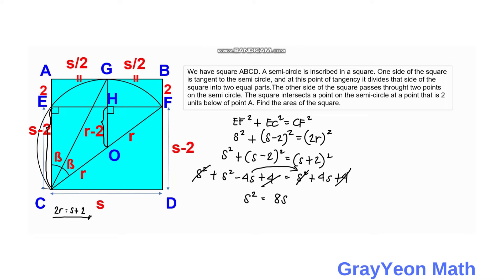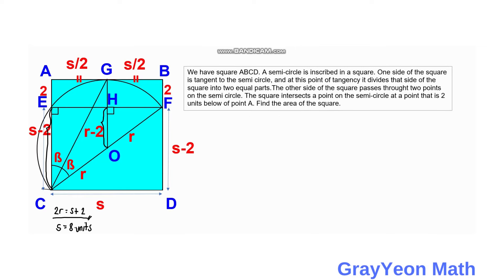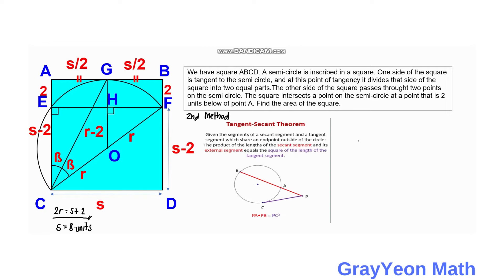This gives us 8S equals S squared, or the quadratic S squared minus 8S equals 0. Factoring: S times (S minus 8) equals 0, so S minus 8 equals 0, giving S equals 8. For the final step, since the side length is 8, the area of the square is 8 squared, which equals 64 square units. That is our answer for the first method.